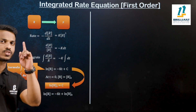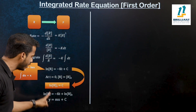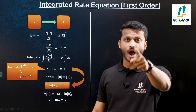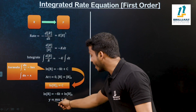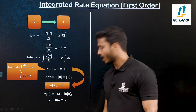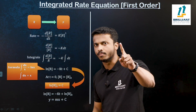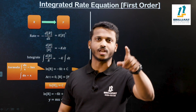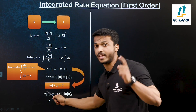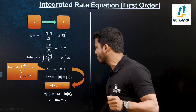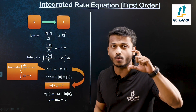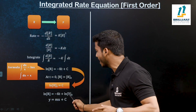This equation is in the format of a straight line. The equation for a straight line is y equals mx plus c. Here: y-axis is ln R, x-axis is time t, m is the slope of the line — that is minus k — and c is the y-intercept, which is ln R₀.